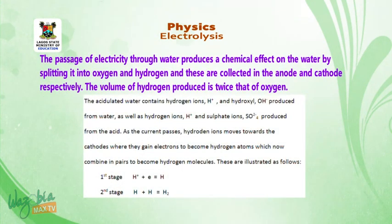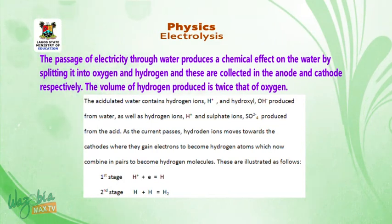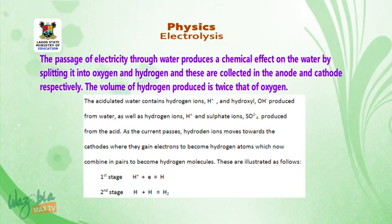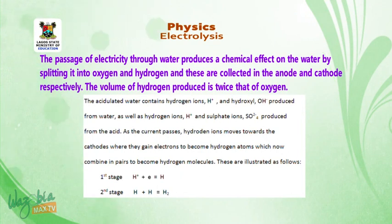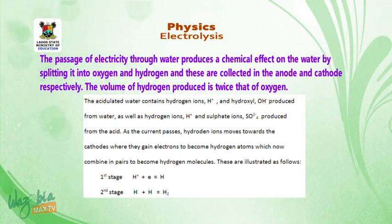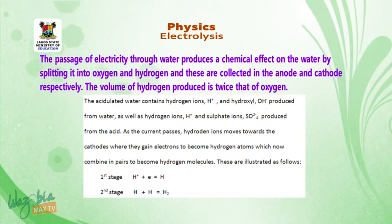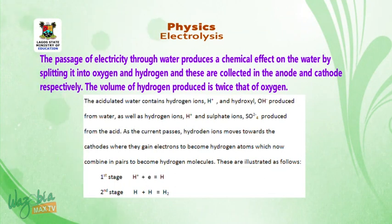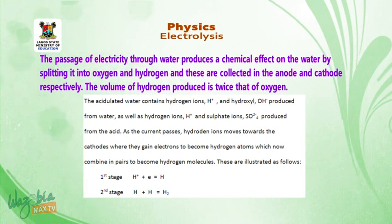The passage of electricity through water produces a chemical effect on the water by splitting it into oxygen and hydrogen, and these are collected at the anode and cathode respectively. The volume of hydrogen produced is twice that of oxygen. The acidulated water contains hydrogen ion H⁺ and hydroxide ion OH⁻ produced from water, as well as hydrogen ion H⁺ and sulfate ion SO₄²⁻ produced from the acid. As the current passes, hydrogen ion H⁺ moves towards the cathode, where they gain electrons to become hydrogen atoms, which combine in pairs to become hydrogen molecules.